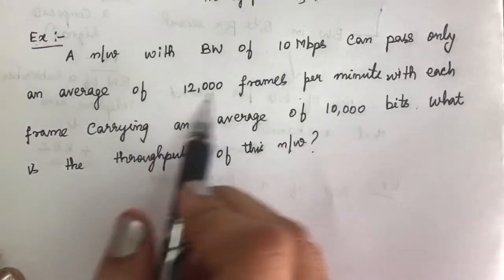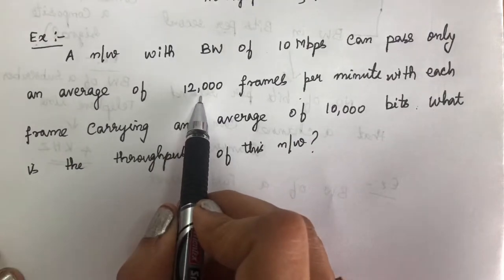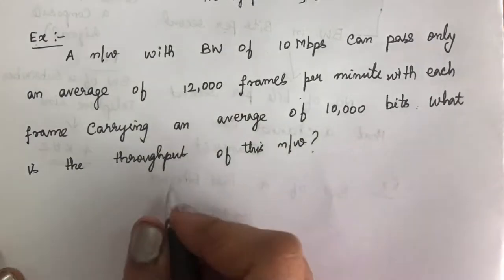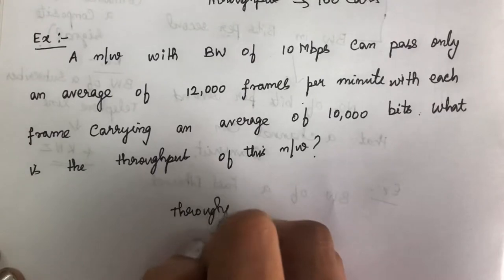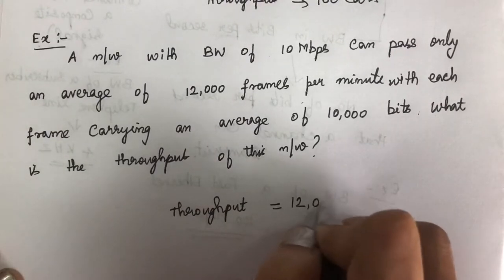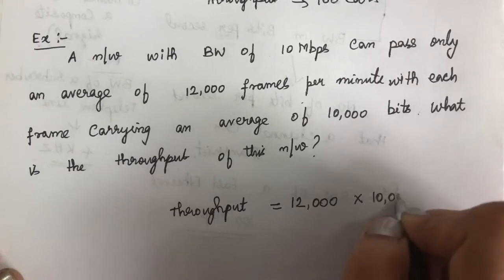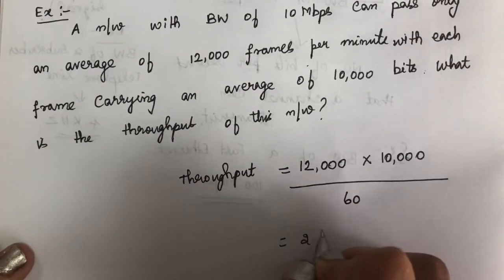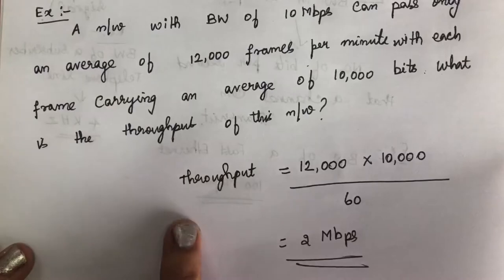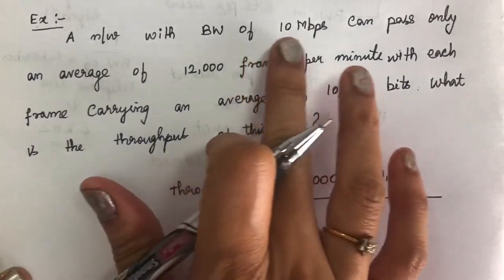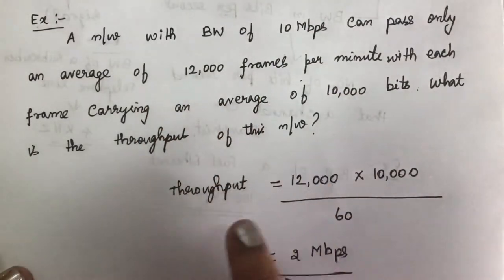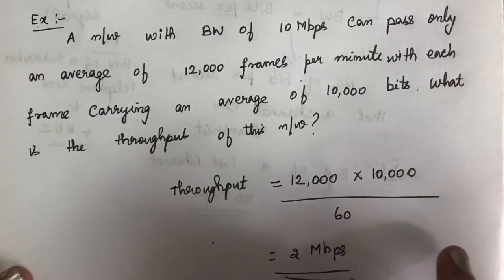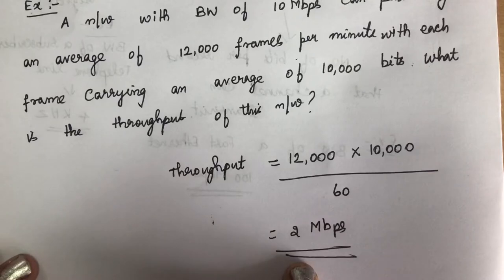Here they have given 12,000 frames per minute, with each frame having an average of 10,000 bits. So the throughput will be 12,000 multiplied by 10,000 bits, divided by 60 seconds. The answer is 2 Mbps. So the throughput of this network is 2 Mbps, while the bandwidth is 10 Mbps.